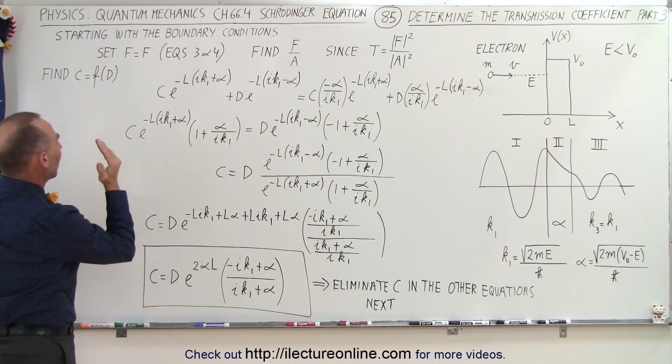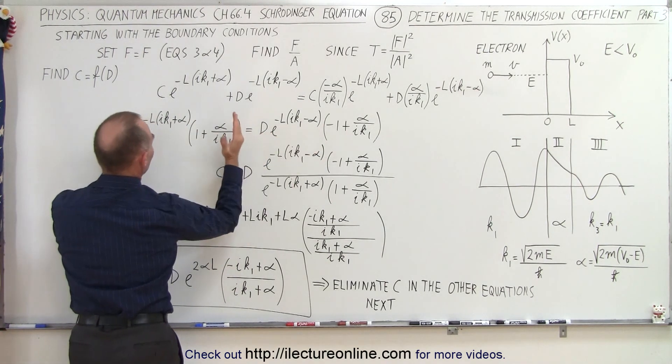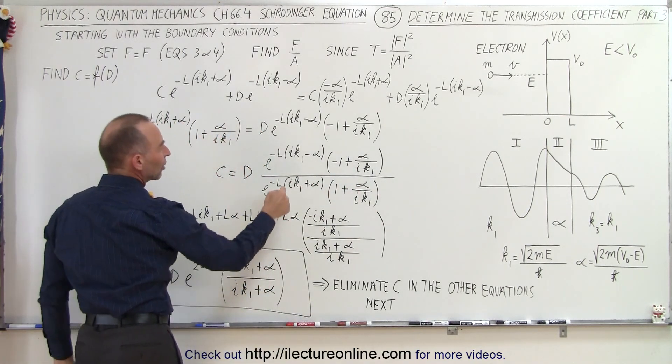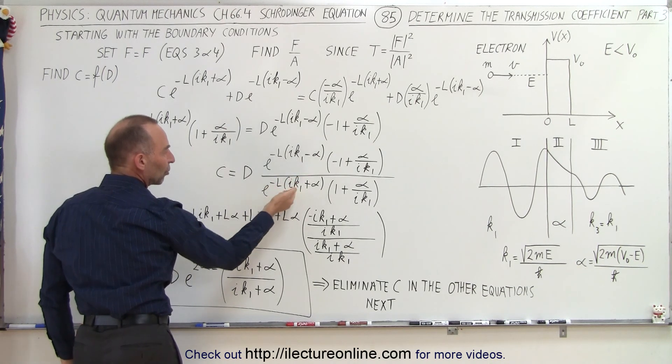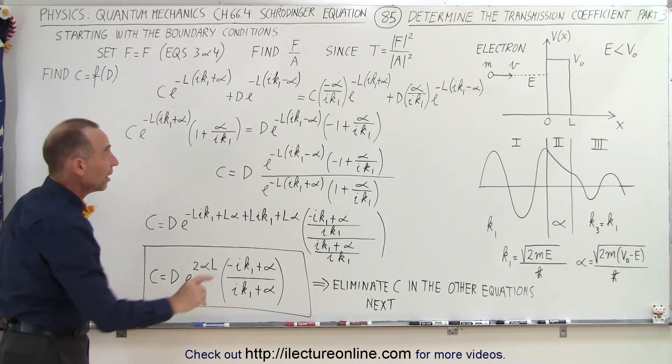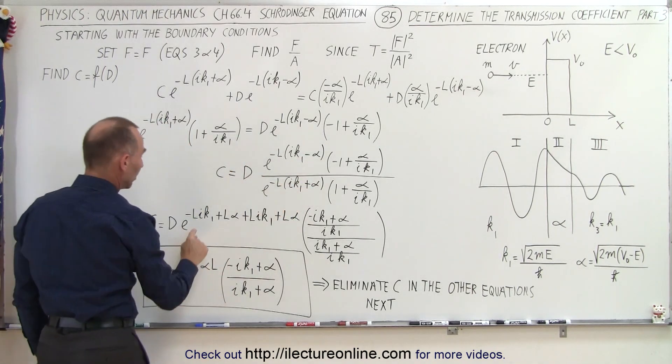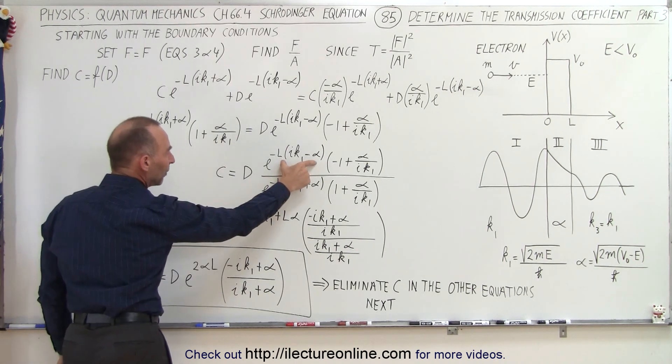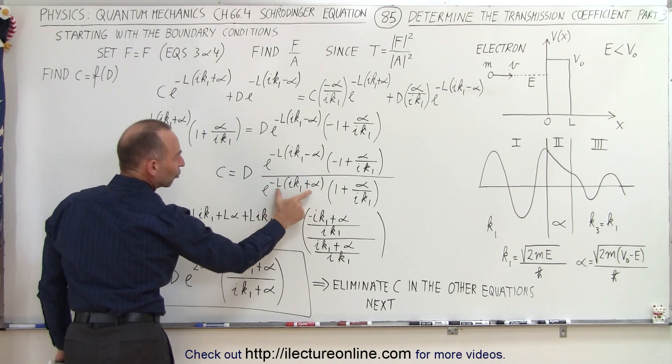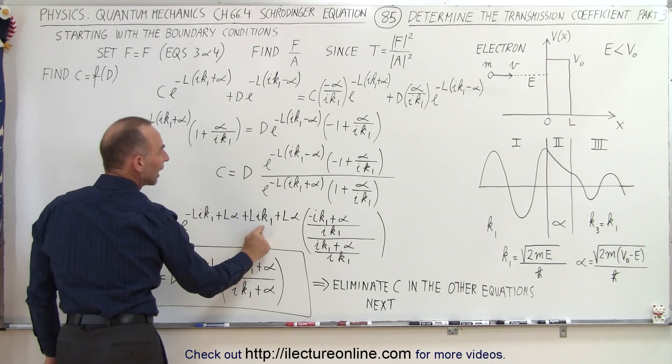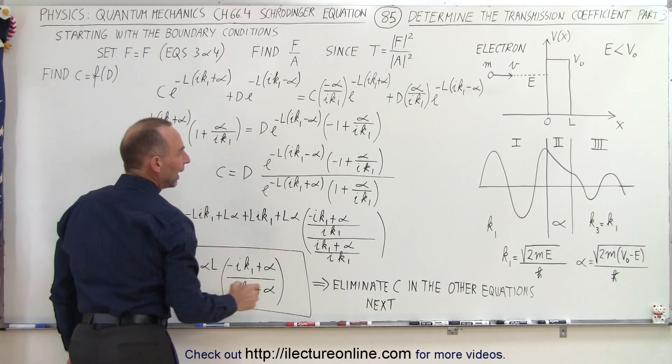Then, since we're trying to isolate C, we're going to divide both sides of the equation by this quantity right here. We put that in the denominator. Then you can see that E to this exponent divided by E to this exponent, we simply subtract these from that. But to do that without making a mistake, we're going to multiply these out, so we end up with minus L IK1 plus L alpha from the top, and then we subtract these two negative portions of the exponent. They become positive when we bring them to the top, so we have L IK1 plus L alpha.